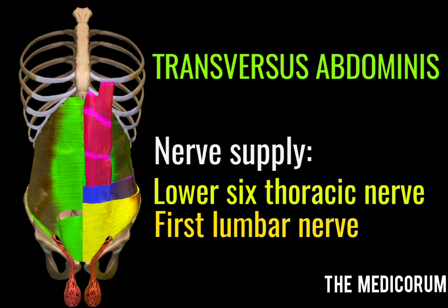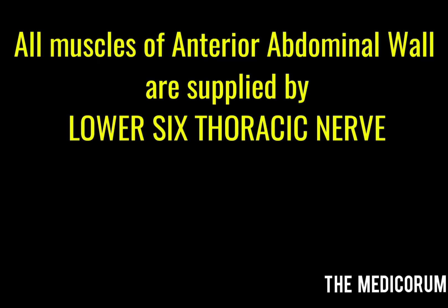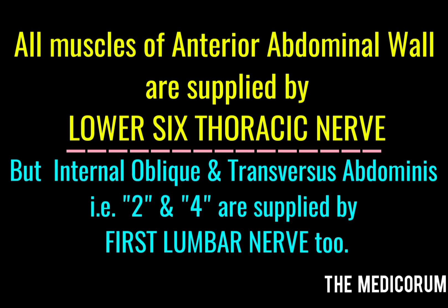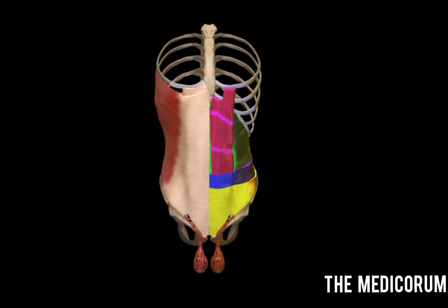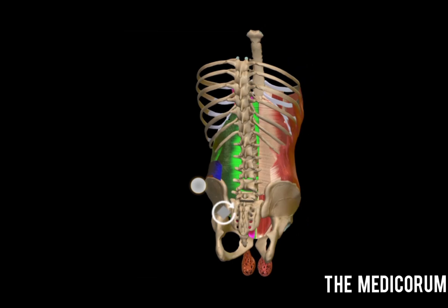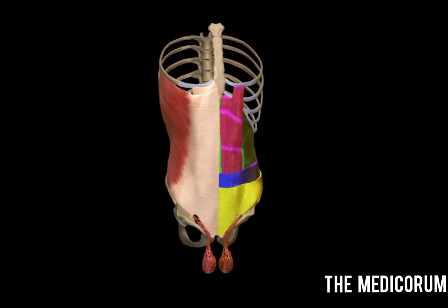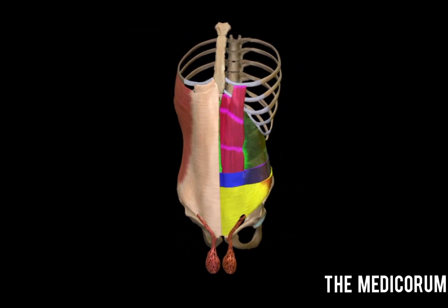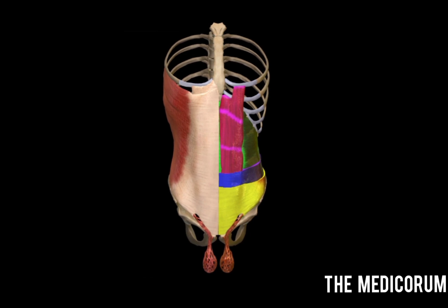Hence, the conclusion we came to is that all the muscles of the anterior abdominal wall are supplied by the lower sixth thoracic nerve. But the second and the fourth muscles — that is, internal oblique and transverse abdominis — are also supplied by the first lumbar nerve. Hope this session was helpful for you to imagine all the muscles of the abdomen. Please do like, share, and subscribe to my channel. Thank you so much for watching.